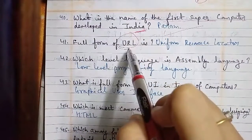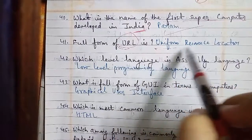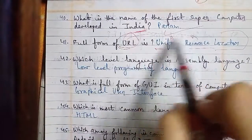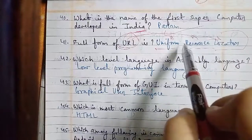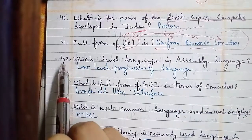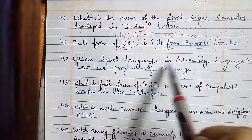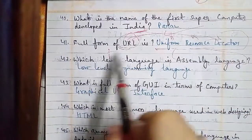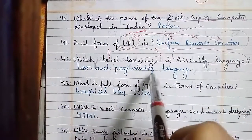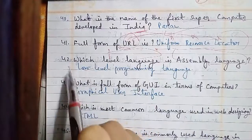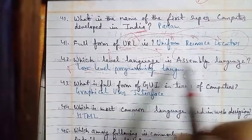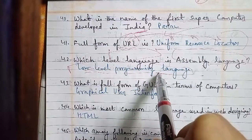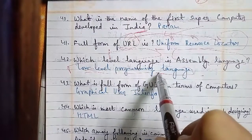The full form of URL is Uniform Resource Locator — U stands for Uniform, R stands for Resource, and L stands for Locator. Question number 42: which level language is assembly language? The answer is low-level programming language. Assembly language and low-level programming language refer to the same thing, so either term can be used interchangeably in answers.